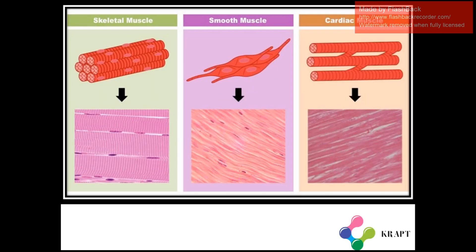In the diagram, the first figure is the skeletal muscle, the second is the smooth muscle, and the third is the cardiac muscle tissue.